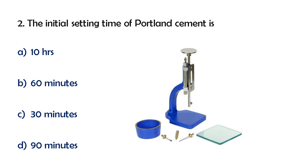The initial setting time of Portland cement. What is Portland cement? The initial setting time is how much? Portland cement is a simple cement — we use OPC or Ordinary Portland Cement. For the initial setting time, we test the amount of water mixed with cement, using a consistency test on the water. The consistency test determines initial setting time and final setting time.